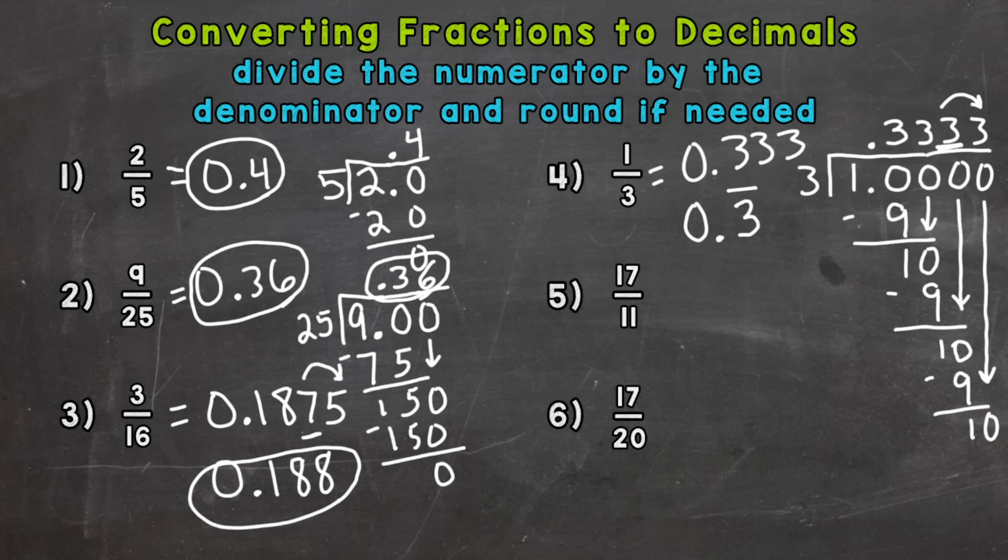So number 5, we actually have an improper fraction. So this is going to be above one whole. It's greater than a whole. So if you plug 17 over 11, or 17 divided by 11 in on a calculator, you're going to get 1.54, 54, 54, and it's just going to be 54's repeating. So, again, we can round to the thousandths. So a 5 there. Look next door. That 4 says stay the same. So our rounded answer would be 1 and 545 thousandths.